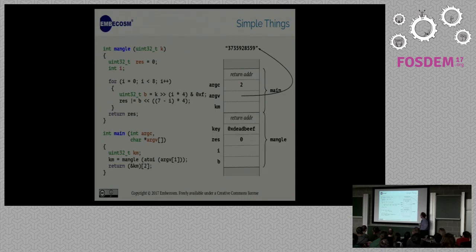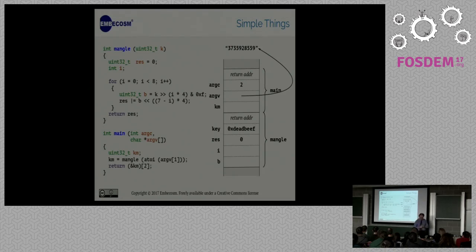There we are in the main program. I've given it a string as an argument which it will convert into a value and pass to my argument. So we go in and we call our function, and there's our key. And our initial value of res is zero, and then let's go around the loop and get to the end of that function and return. We've inverted all the values. And that's it. We're back in main. We've finished our program and we've thrown away our key.